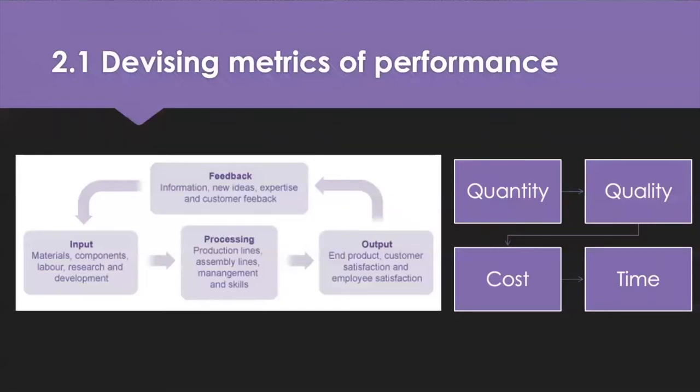Common types of measures include quantity — the change in numbers such as sales or stock. Quality, which isn't easily quantifiable but is indicated by things like customer satisfaction or rejected goods. Cost could be represented by currency, cost of production or price of a product. And time is about meeting deadlines and delivery periods, indicated by hours, days, months or even years.